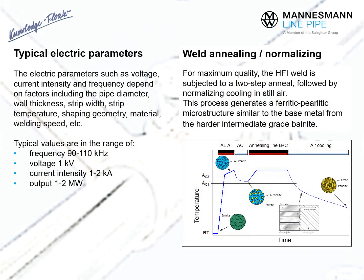The exact electric settings depend on a variety of factors, such as the specified pipe diameter and wall thickness, the width and temperature of the strip, the shaping geometry, the material, and the optimum welding speed.